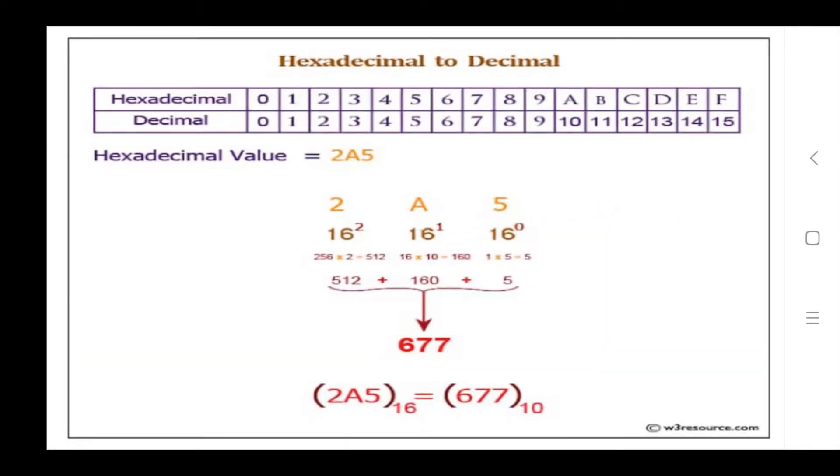A is 10, B is 11, C is 12, D is 13, E is 14, F is 15. For hexadecimal value 2A5, I will isolate these numbers.